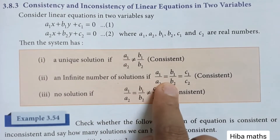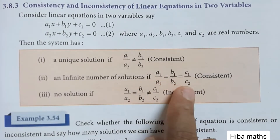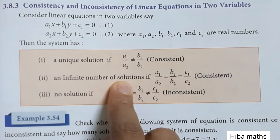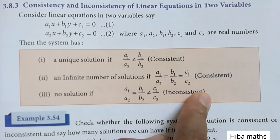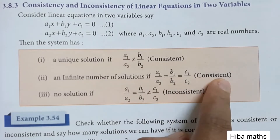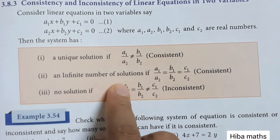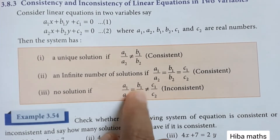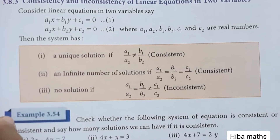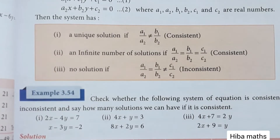If A1/A2 equals B1/B2 equals C1/C2, then the equations have an infinite number of solutions and are consistent. If A1/A2 equals B1/B2 but is not equal to C1/C2, then the system is inconsistent — that means no solution. Inconsistent means no solution.